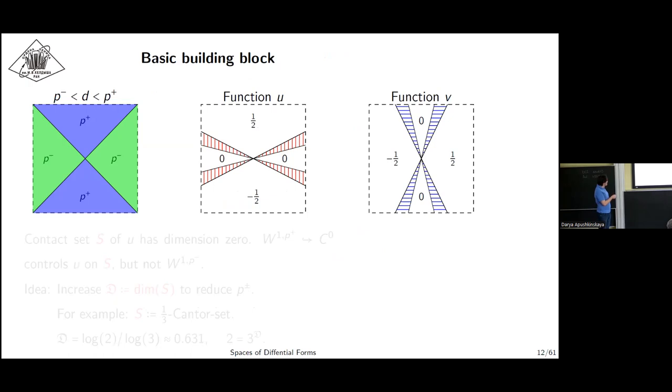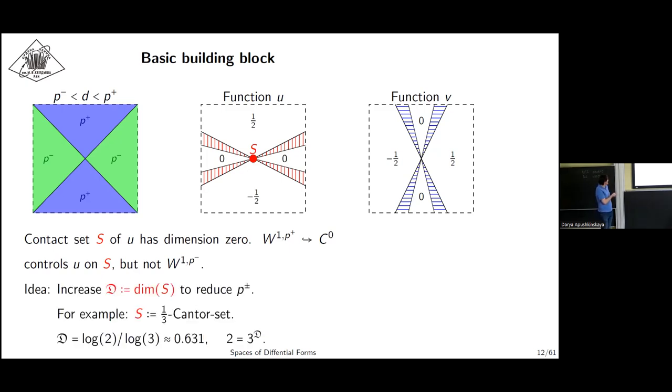Here is some modification of standard Jacobs' building block and there is a contact set which in this case has Hausdorff dimension zero. The idea is to include the dimension of this contact set—to find an example, to build an example with this contact set of intermediate dimensions between zero and one. For example, one can take Cantor sets.